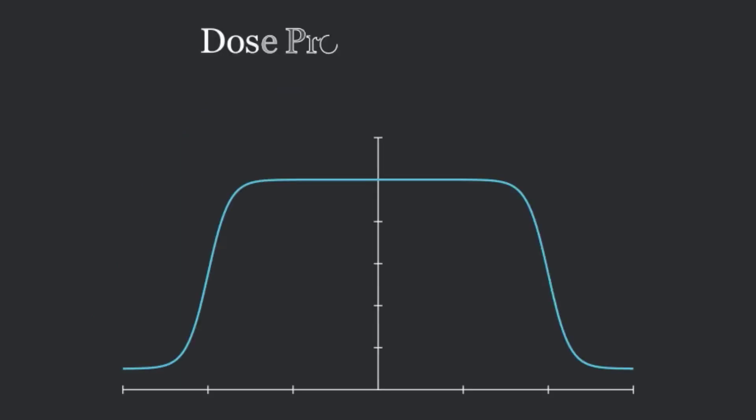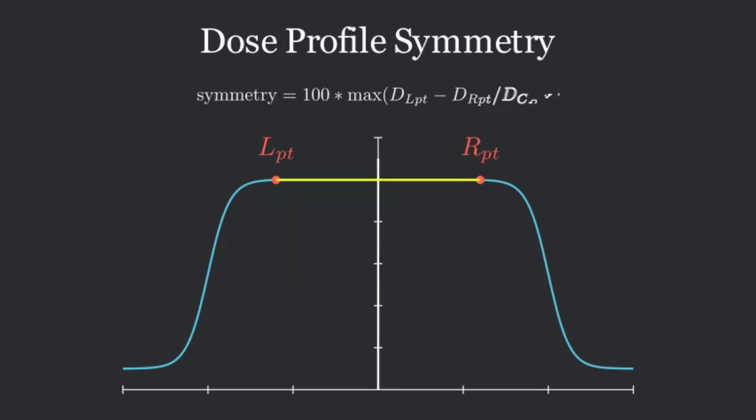Now let's take a look at symmetry. In an ideal world, our beam would be perfectly symmetrical. And this is a measure of how close we are to the ideal. Here, we have a variance point definition. We take a look at points to the left and the right, equal distance from the center, and look for the max.